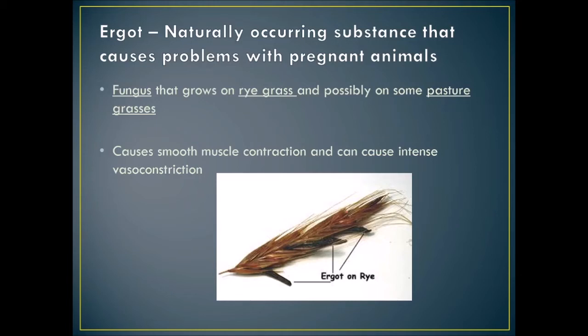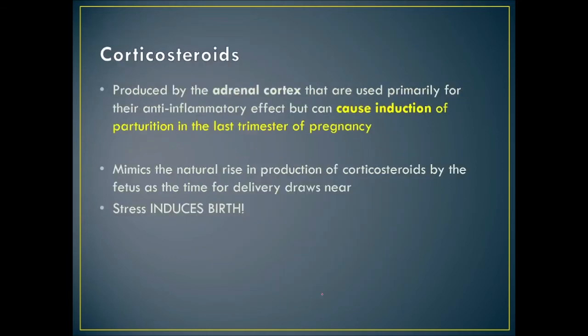Corticosteroids mimic the natural rise in fetal corticosteroid production as delivery nears. Stress induces birth — this is why pregnant women or animals close to delivery who are stressed may go into labor. Pheromones are chemicals released by the body; animals and people produce them and react to them, though we don't consciously perceive them.